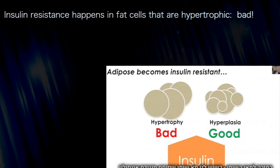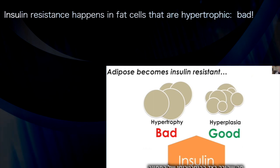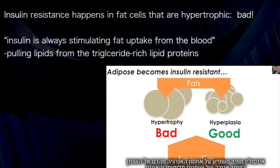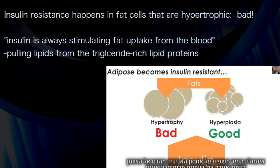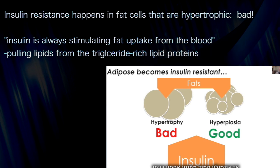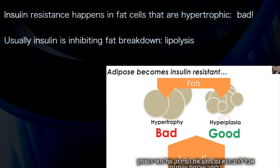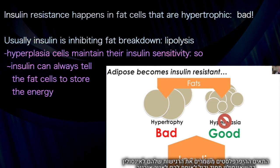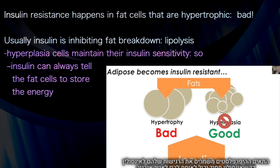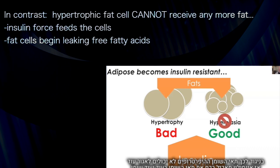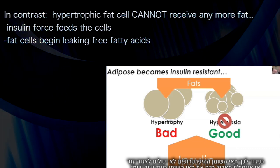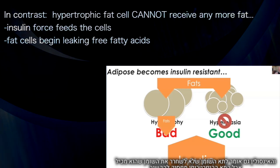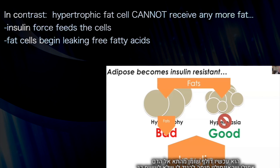When a fat cell becomes insulin resistant on the hypertrophic side, insulin is always stimulating the uptake of fats from the blood — specifically through activation of lipoprotein lipase and pulling lipids off of triglyceride-rich lipoproteins. Insulin is also always inhibiting fat breakdown, i.e., inhibiting lipolysis. In hyperplastic fat cells, they maintain their insulin sensitivity, so insulin can always tell the fat cells to store energy. In contrast, the hypertrophic fat cell cannot store anymore — insulin is force-feeding it more and more fat while trying to tell it not to let any go. The hypertrophic fat cell doesn't listen; it is now leaking free fatty acids, even though insulin is trying to tell it not to.